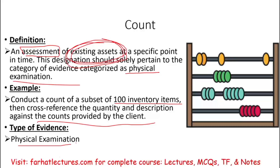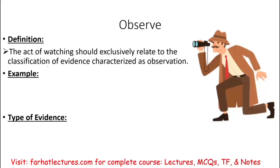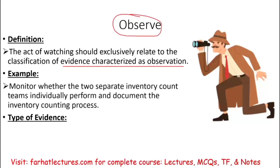Observe means the act of watching, and it should exclusively relate to the classification of evidence characterized as observation. An example would be to monitor whether two separate inventory count teams individually perform and document the inventory counting process. If management says two different teams count the inventory, there is no way to verify this unless you observe. Similarly, if accounts receivable personnel should not handle cash, you observe the process to make sure they don't. The type of evidence is observation.